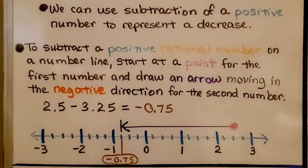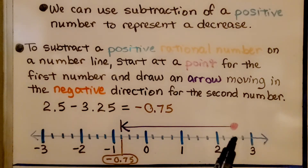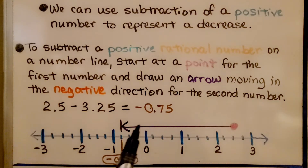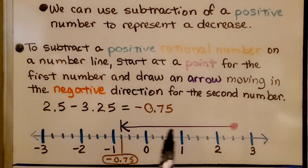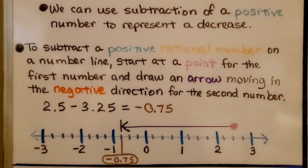We can use subtraction of a positive number to represent a decrease. To subtract a positive rational number on a number line, we start at a point for the first number. Our first number is 2 and 5 tenths, so that's going to be in between 2 and 3, right in the middle. We draw our point, then draw an arrow moving to the left for the second number. We're subtracting 3 and 25 hundredths, and we're going to land at negative 75 hundredths. So 2 and 5 tenths minus 3 and 25 hundredths equals negative 75 hundredths.